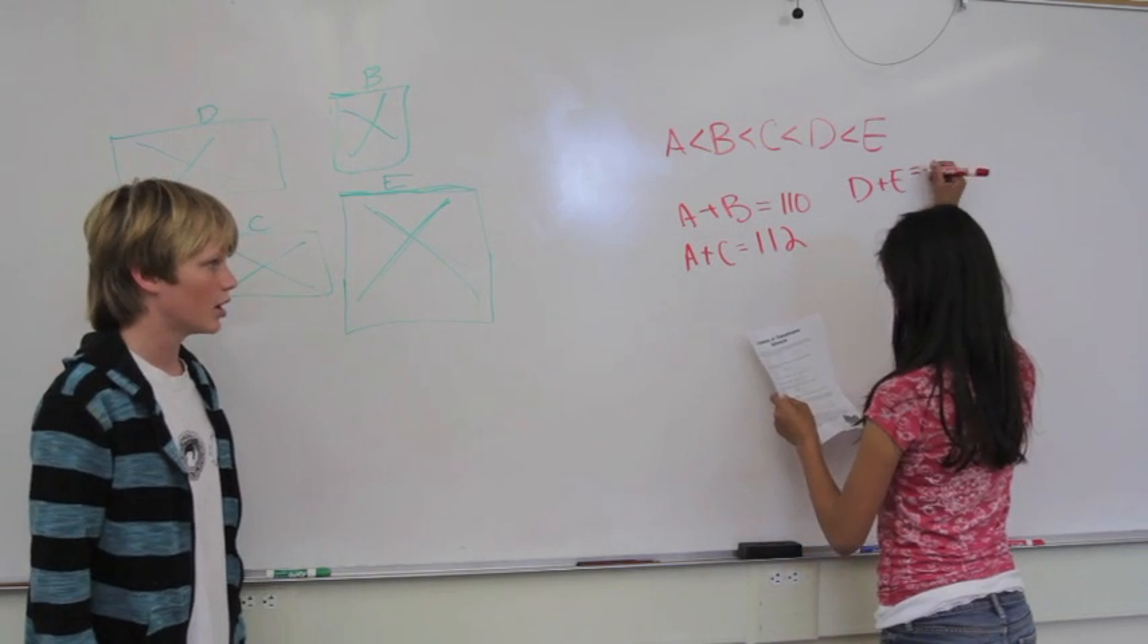We can also say that we know the two biggest ones, D and E, will be the biggest sum, 121. And we know that C plus E will be the second largest sum, and it will be 120.